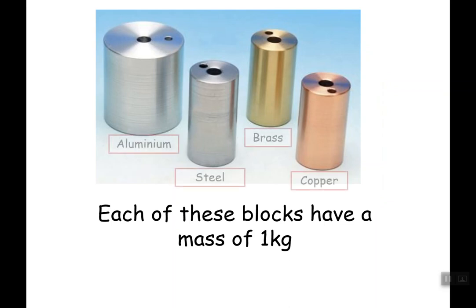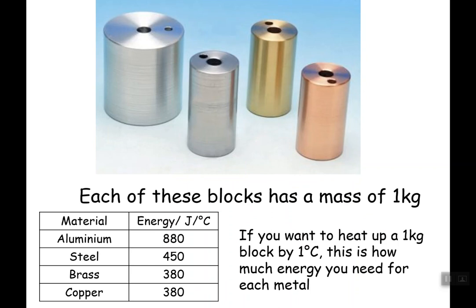This is where it comes on to specific capacity. If we look at these blocks here, the energy required to change the temperature of one of these one kilogram blocks by one degree Celsius. Aluminium takes 880 joules per degree Celsius for this kilogram. So if I want to increase the temperature of this aluminium block by one degree Celsius, I need 880 joules. If I have two kilograms, that's twice that. If I want to change it by 10 degrees instead of one degree, that's 10 times that.